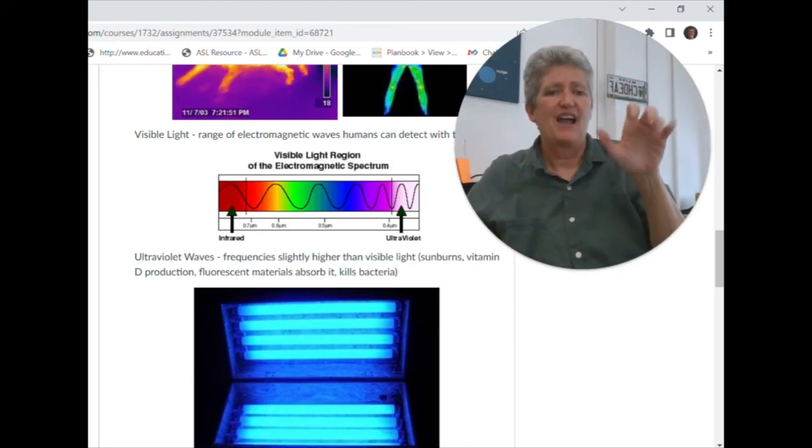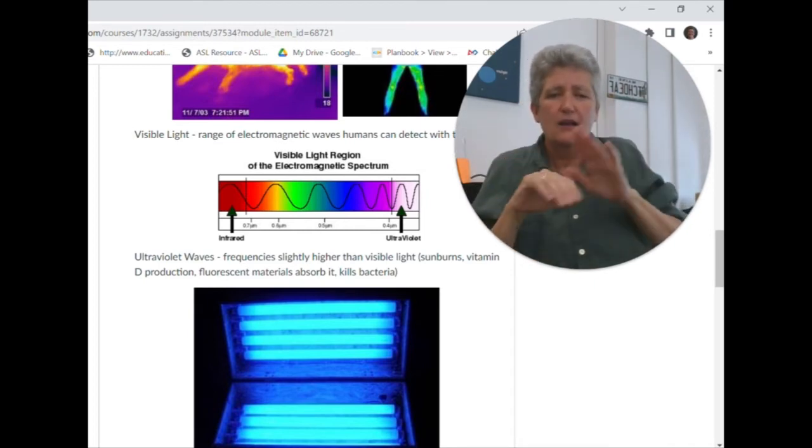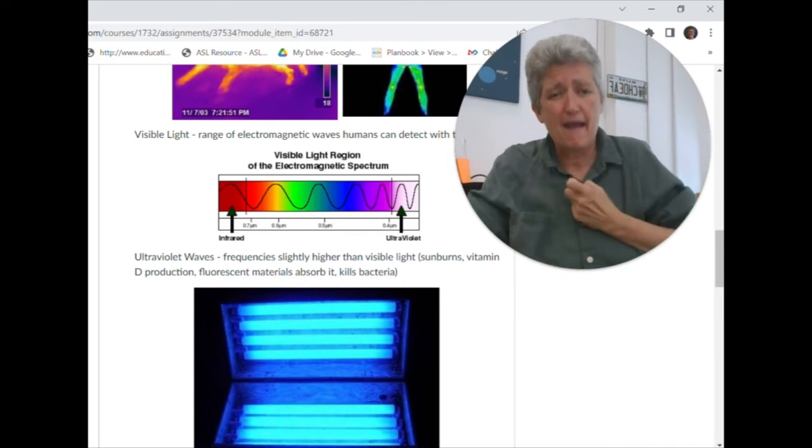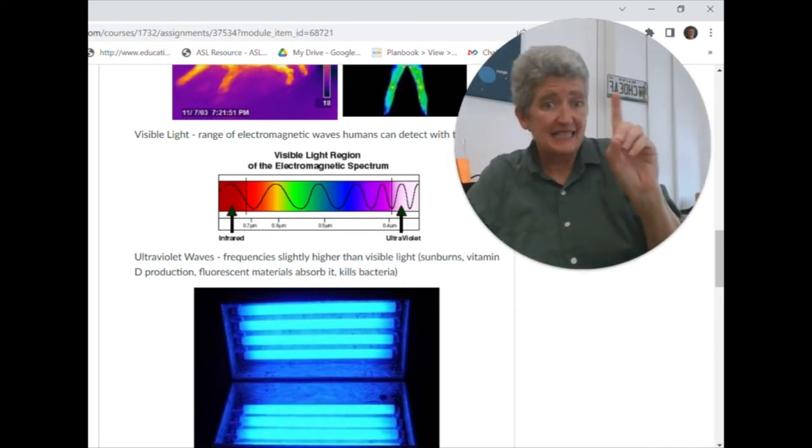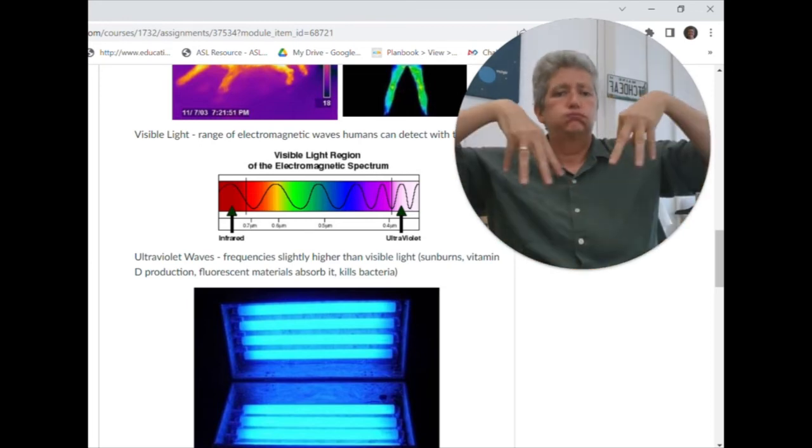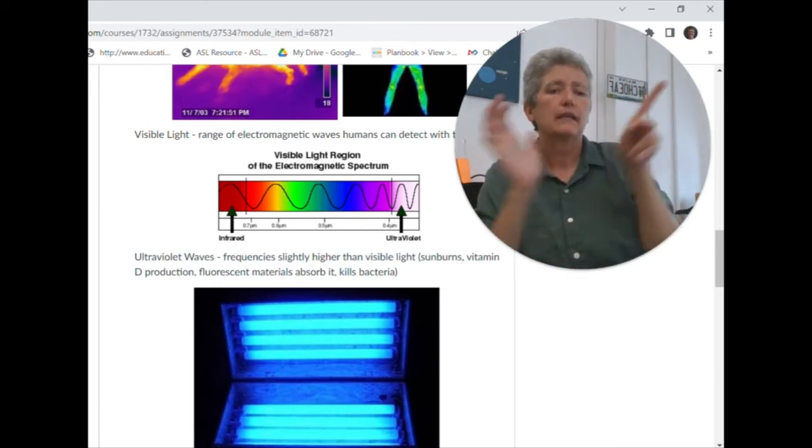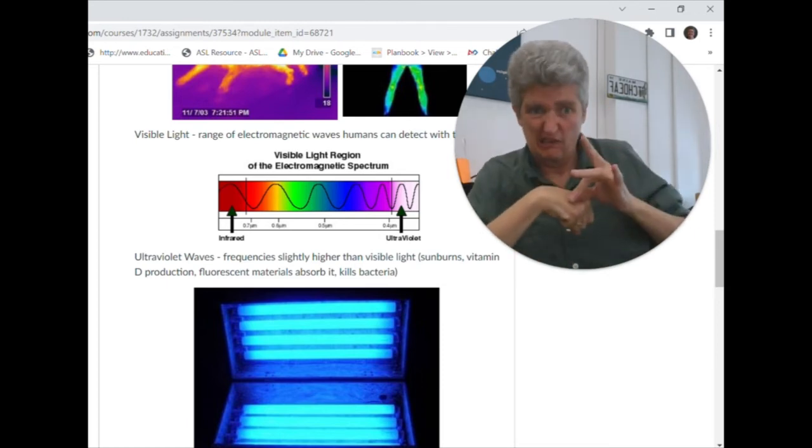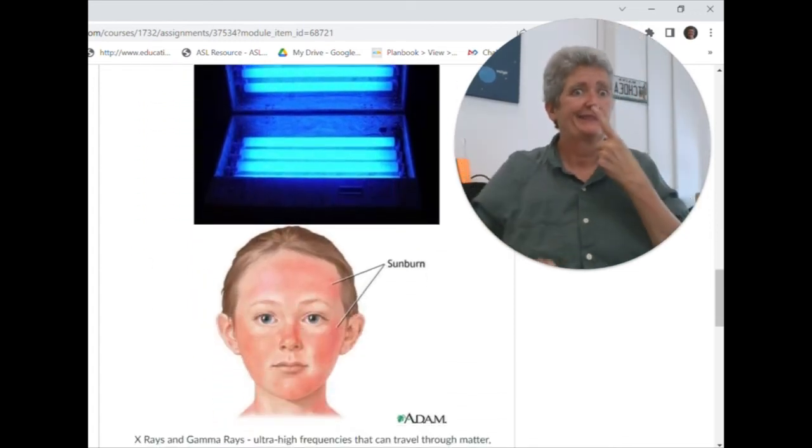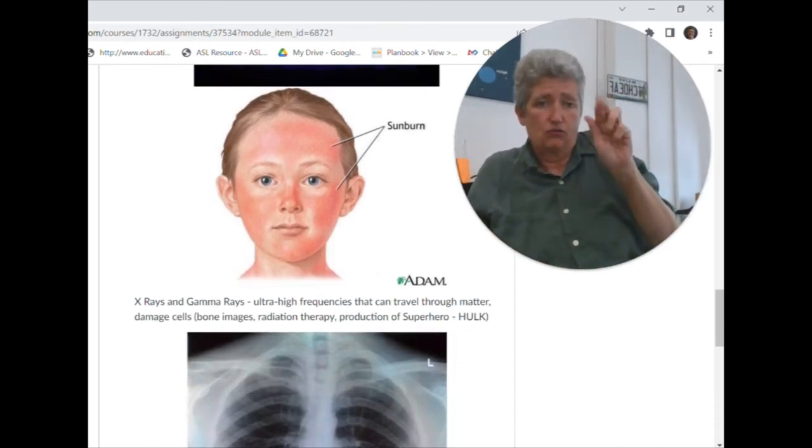So then beyond the visible light is ultraviolet. It's a little bit faster than the violet that you can see. When you get a sunburn, you know you get red from the sun, that's the UV. You get vitamin D also from that UV light. It's light that can help to kill bacteria, which is kind of cool. UV light can help kill bacteria.